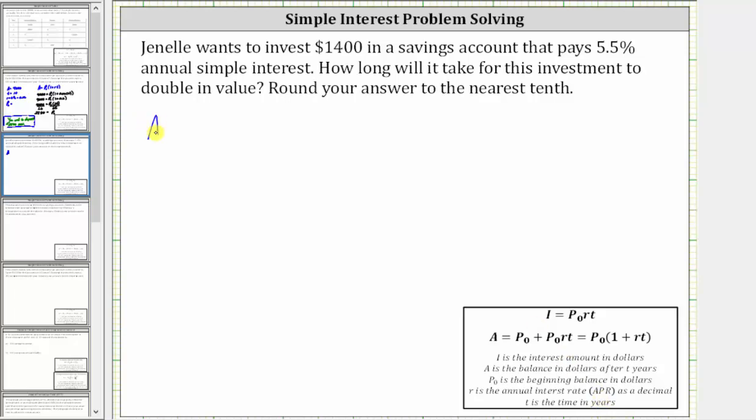So let's write the equation down. And now let's list all the given information. Janelle wants to invest $1,400, and therefore P sub zero, the beginning balance, is 1,400.